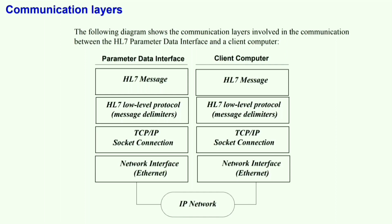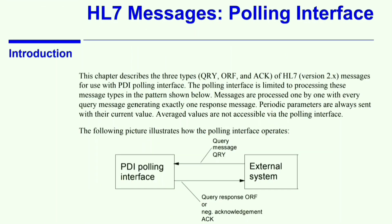Each client uses a TCP/IP socket connection for PDI communication. PDI allows multiple connections, but only one connection at a time to a particular client machine, as identified by IP addresses. The HL7 messages are sent at fixed intervals depending on the type of data they include. Periodic parameters are sent every 5, 10, 30, or 60 seconds, depending on the sending interval configuration setting.